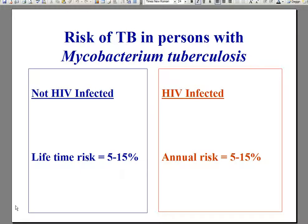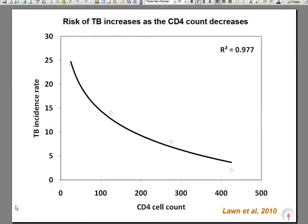HIV exerts its effects by targeting the CD4 lymphocyte, the leader of the cellular immune system, which is responsible for controlling the growth of mycobacterium tuberculosis. Globally, more than 2 billion people are infected with mycobacterium tuberculosis. The non-HIV infected person has a lifetime risk of getting active TB of 5 to 15%. However, in those with HIV this risk is hugely increased to a staggering annual risk of 5 to 15%. This risk is dependent on the CD4 count, and as this declines the risk of TB rises exponentially. The absolute scale of risk also depends on prevailing socio-economic conditions and ongoing TB exposure in the community, which in Southern Africa can reach 25% per annum.